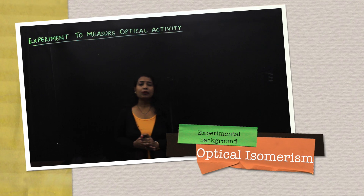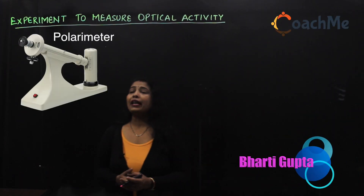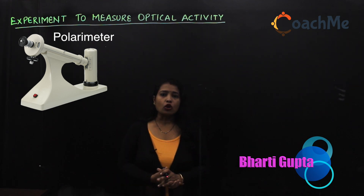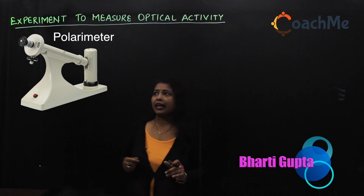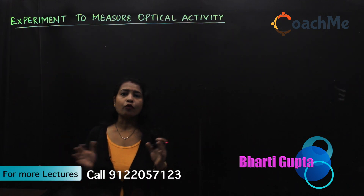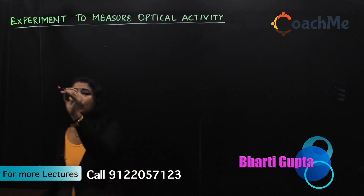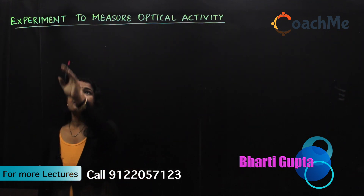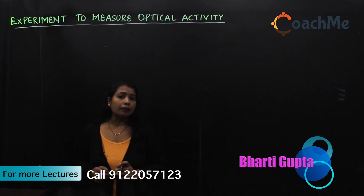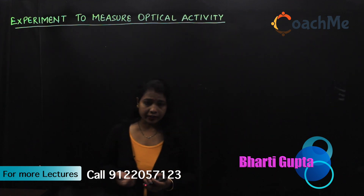Now let's see the experimental setup. How does the polarimeter work? How in a lab can we decide whether a given compound is optically active or inactive? What is the setup inside the polarimeter and what do we have to do to know whether the compound is active or inactive?